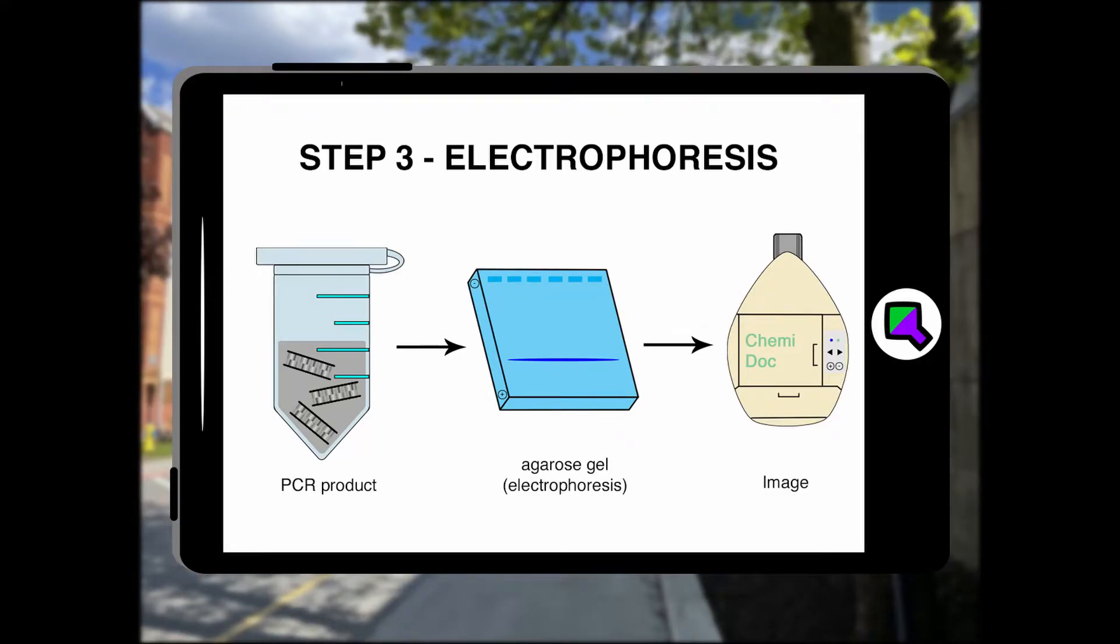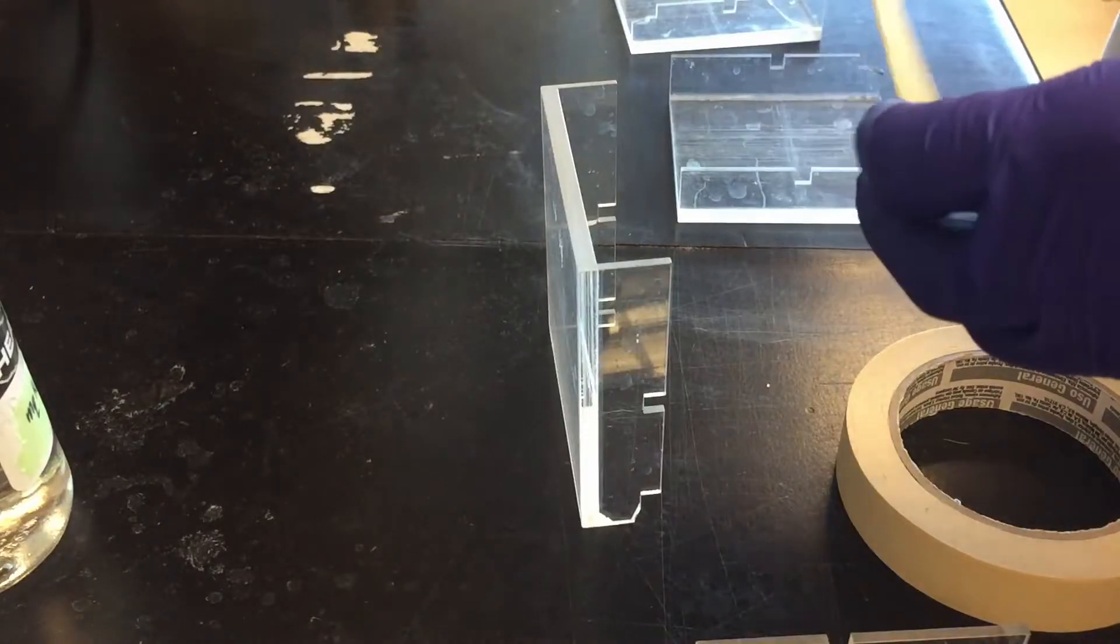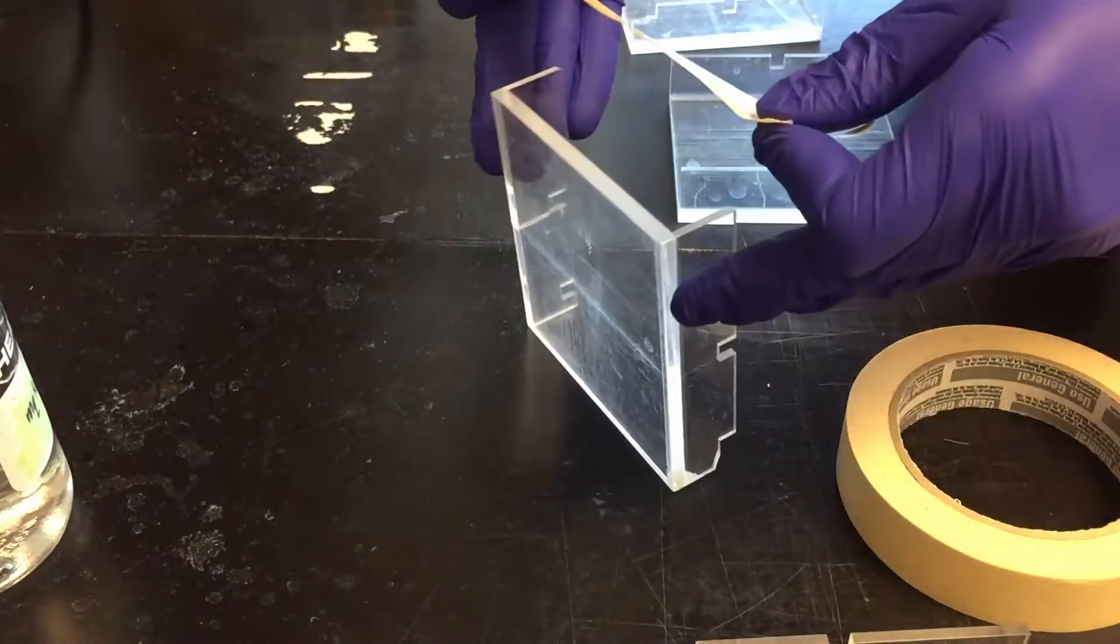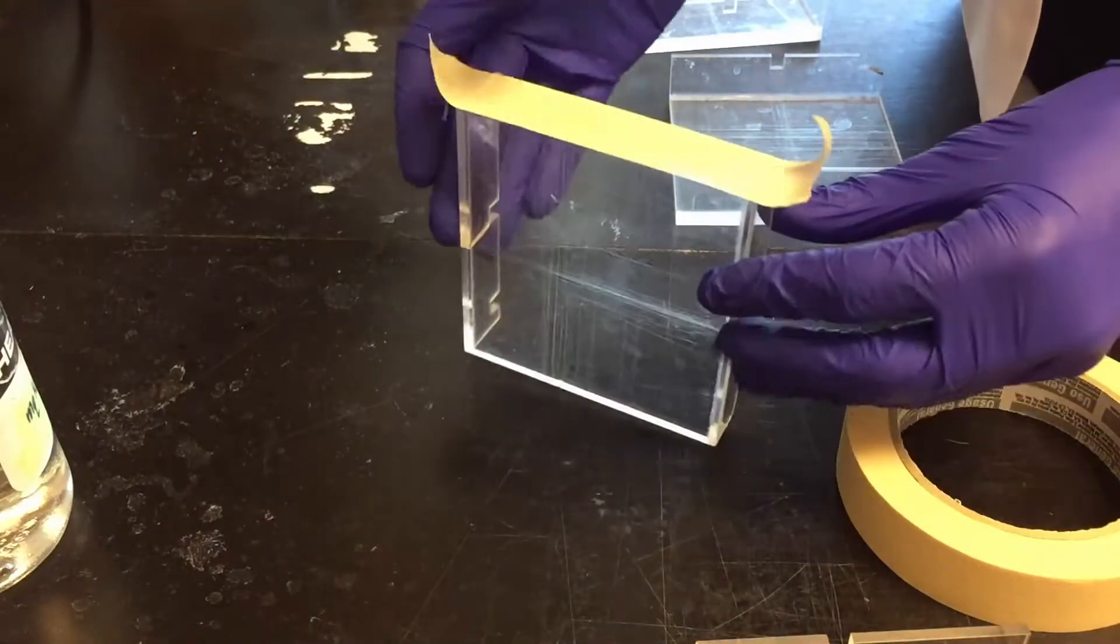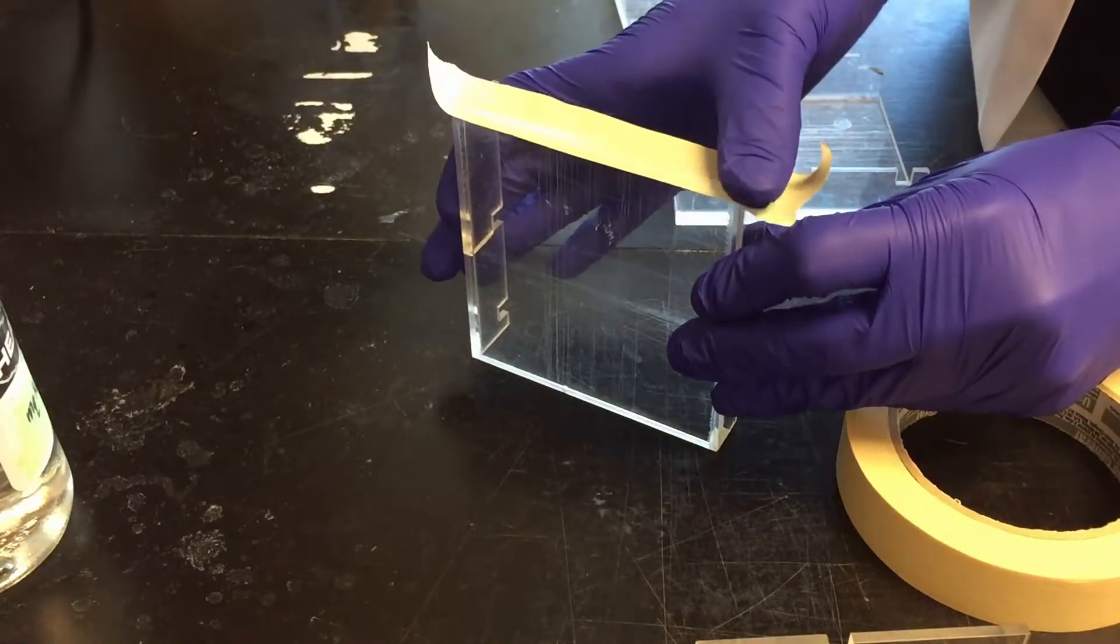Step three is to make an agarose gel so we can check the PCR. Most gels are made in a buffer tank with a gasket but I just use the cassette with tape when I'm making a bunch of gels and I don't want to use a bunch of tanks.